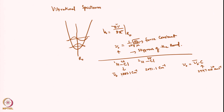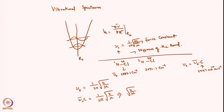Now if I want to calculate k, starting from μ_naught = (1/2π)√(k/μ), I substitute μ_naught = μ_bar × c to get: μ_bar × c = (1/2π)√(k/μ). Rearranging, √(k/μ) = 2π × μ_naught_bar × c, and squaring both sides gives k = (2π × μ_bar × c)² × μ.